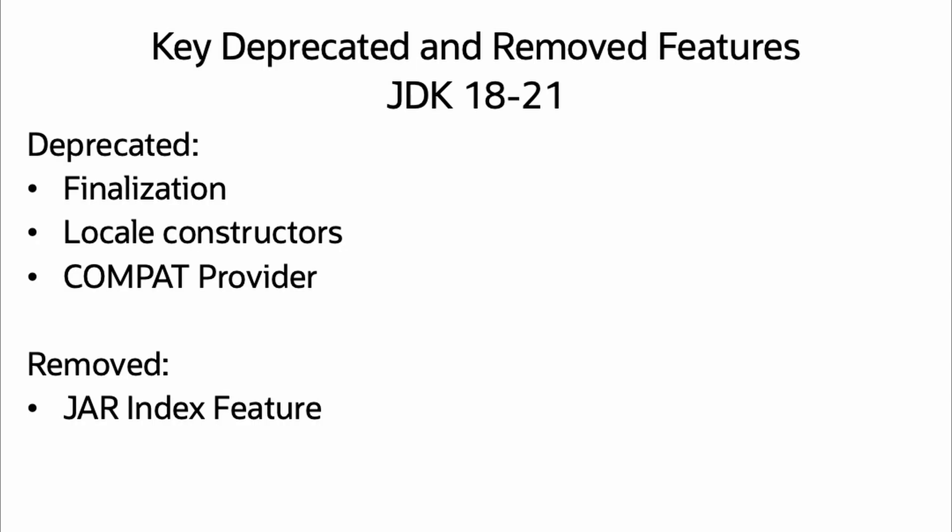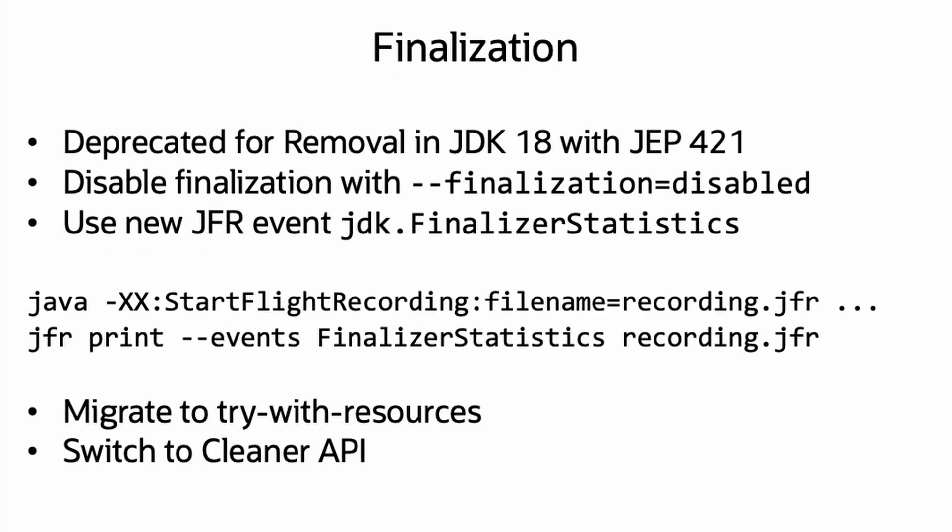Of the features that have been removed or deprecated between JDK 18 and 21 that are worth focusing on: the deprecation of finalization, locale constructors, and the Compat locale provider, and the removal of the JAR index feature. By far the largest and most impactful of these changes was the deprecation for removal of finalization in JDK 18, as covered in JEP 421.